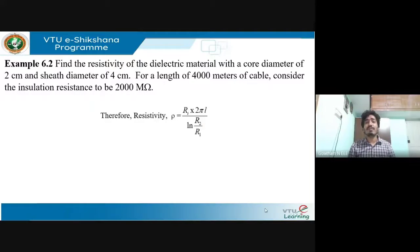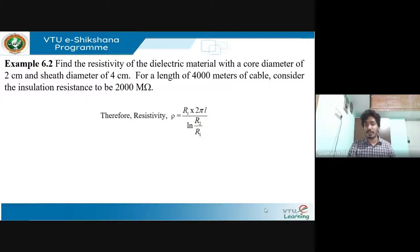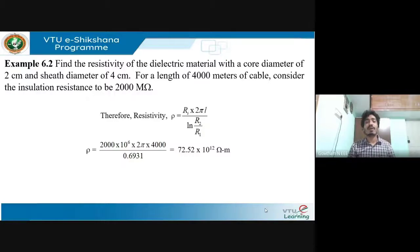The resistivity ρ is obtained by rearranging the insulation resistance expression: ρ = Ri × 2πL / ln(r2/r1). Substituting the values of insulation resistance, length, and ln(r2/r1), we get ρ = 72.52 × 10¹² ohm-meters.